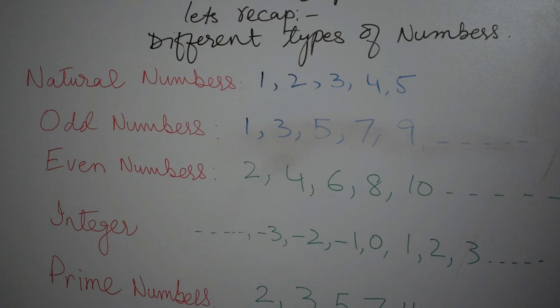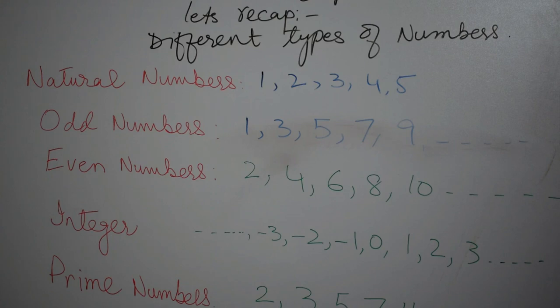One, two, three, four, five, six, seven, eight, nine and till it goes to infinity. These are also called counting numbers. Zero is not included.